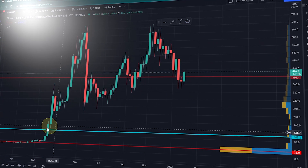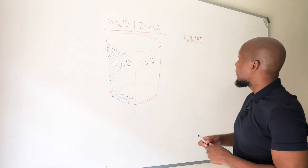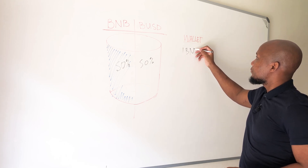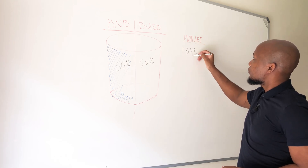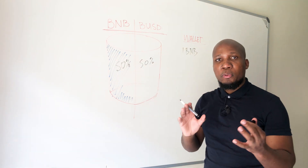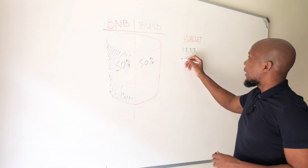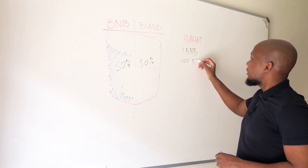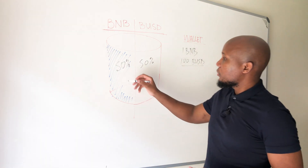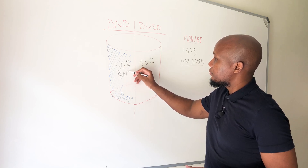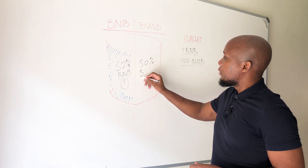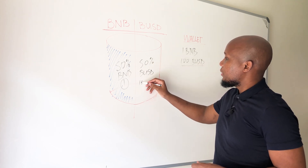From the chart, you can see that the price was actually trading around $100. So we're going to come to our wallet and we're going to have one BNB. As we mentioned, we have to provide an equal proportion when providing liquidity, which means we'll have to provide 100 BUSD. So we have one BNB — that's our quantity — and over here we're going to have 100 BUSD.